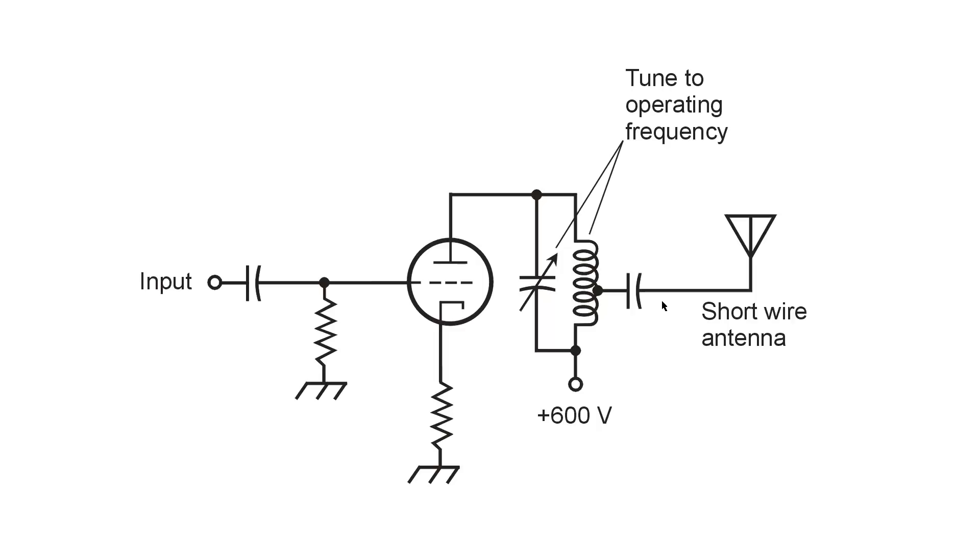This would be what I would do if I wanted to transmit a short range 1.8 MHz 5 Watt signal. 1.8 MHz with this kind of an antenna would only transmit probably a few blocks, city blocks, maybe a mile or two at most.